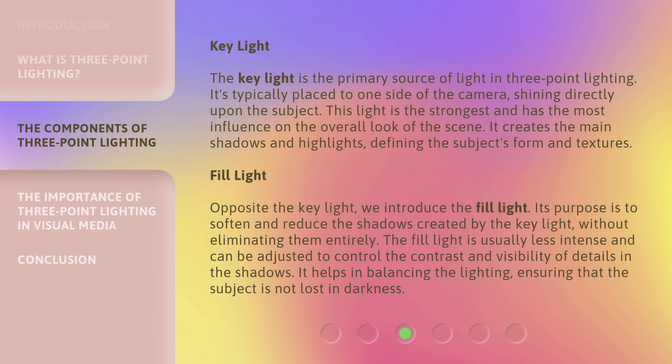Opposite the key light, we introduce the fill light. Its purpose is to soften and reduce the shadows created by the key light, without eliminating them entirely. The fill light is usually less intense and can be adjusted to control the contrast and visibility of details in the shadows. It helps in balancing the lighting, ensuring that the subject is not lost in darkness.